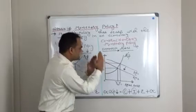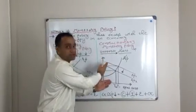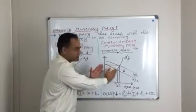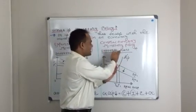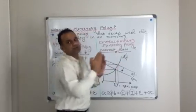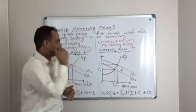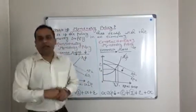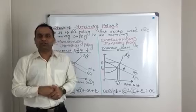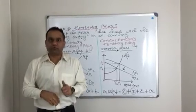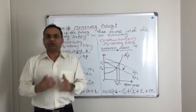This is the same diagram as studied in contractionary fiscal policy — the diagram is the same. Contractionary monetary policy focuses on increasing the interest rates. That covers our expansionary as well as contractionary monetary policy. You can follow me on Facebook, Google Plus, Instagram, LinkedIn, and YouTube, or on my website as well.